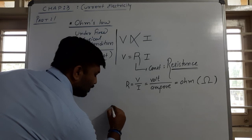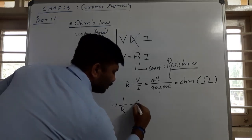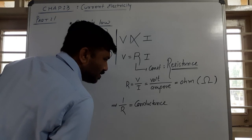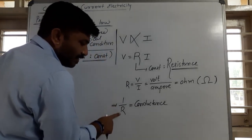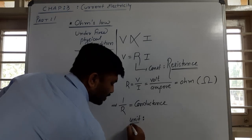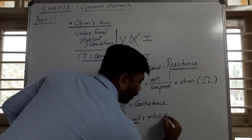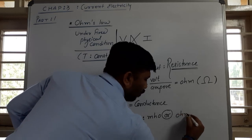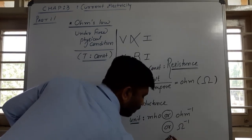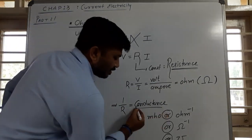If we take the reciprocal of resistance, that is 1 upon R, it is known as conductance. Since it is the reciprocal of resistance, its unit is also the inverse — M-H-O, or Ohm inverse, also called Mho.